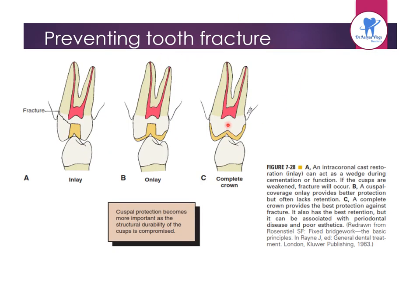Regarding prevention of tooth fracture, cuspal protection becomes more important as the structural durability of the cusp is compromised. An intracoronal restoration or inlay acts as a wedge during cementation or function — if cusps are weakened, fracture may occur. An onlay provides cuspal coverage and better protection but often lacks retention. A complete crown provides the best protection against fracture and the best retention, but can be associated with periodontal disease and poor aesthetics.